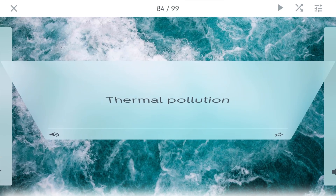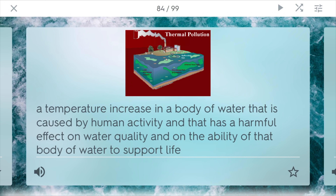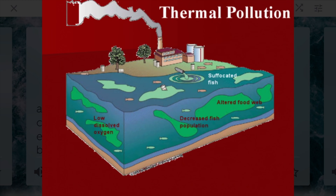Thermal pollution is when a temperature increase in a body of water is caused by human activity. It has a harmful effect on water quality and on the ability of that body of water to support life. We see this a lot with thermal plants — they might produce something and then have hot water they need to release, and if they dump it directly into a lake, it's going to affect the fish and other species that live there.